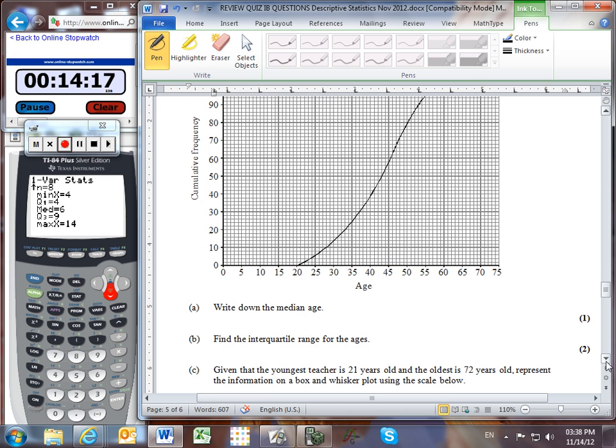Alright, here we go. We need to write down the median age. Well, the middle between 0 and 120 is 60. So we'll draw the line across to 60. You should use a ruler, of course, and then trace it down.